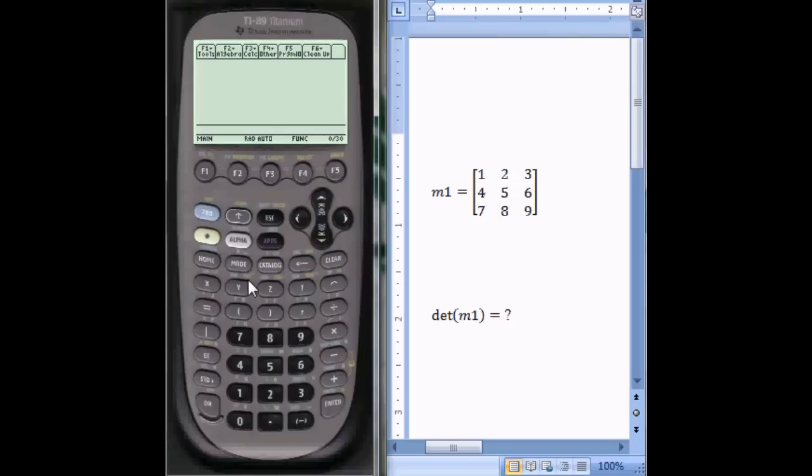At this point, I can go home, and I can simply type in D-E-T. So look at your little keyboard down here, and you'll see that the D is right over this comma. So press alpha, and then this comma, D.